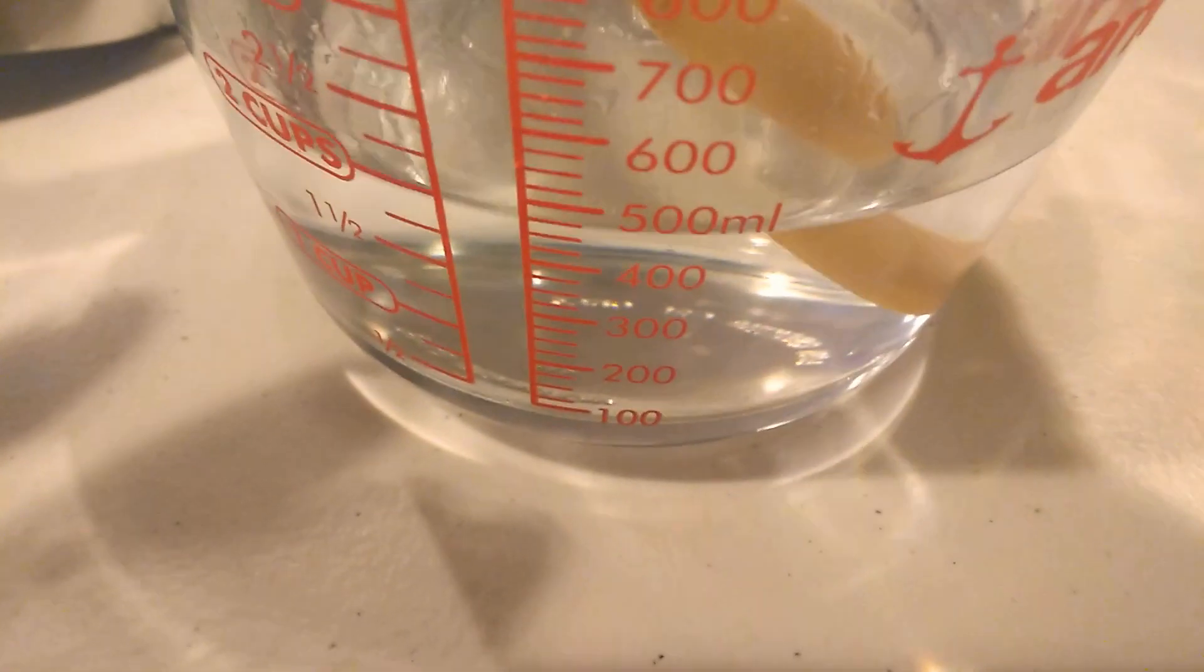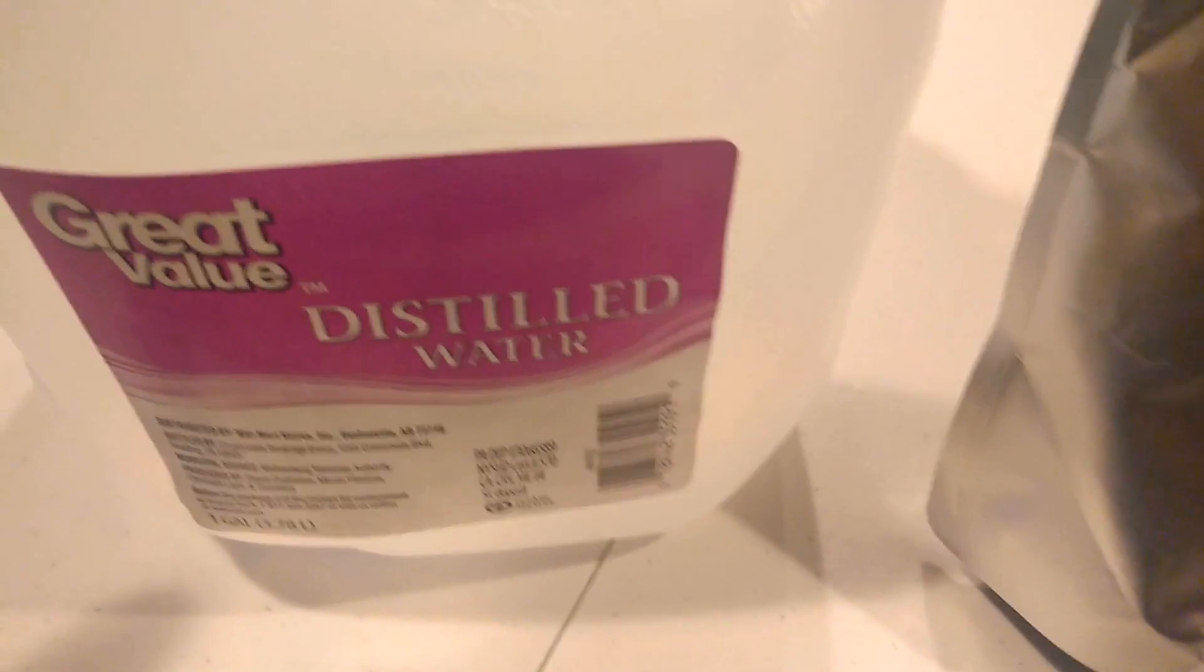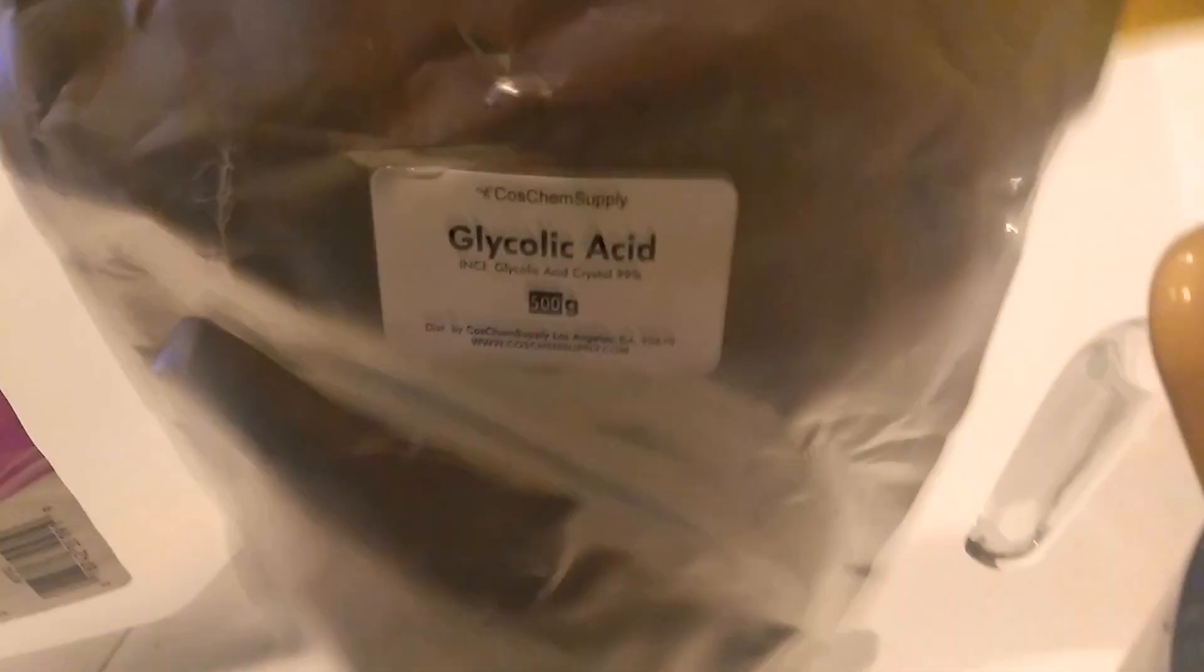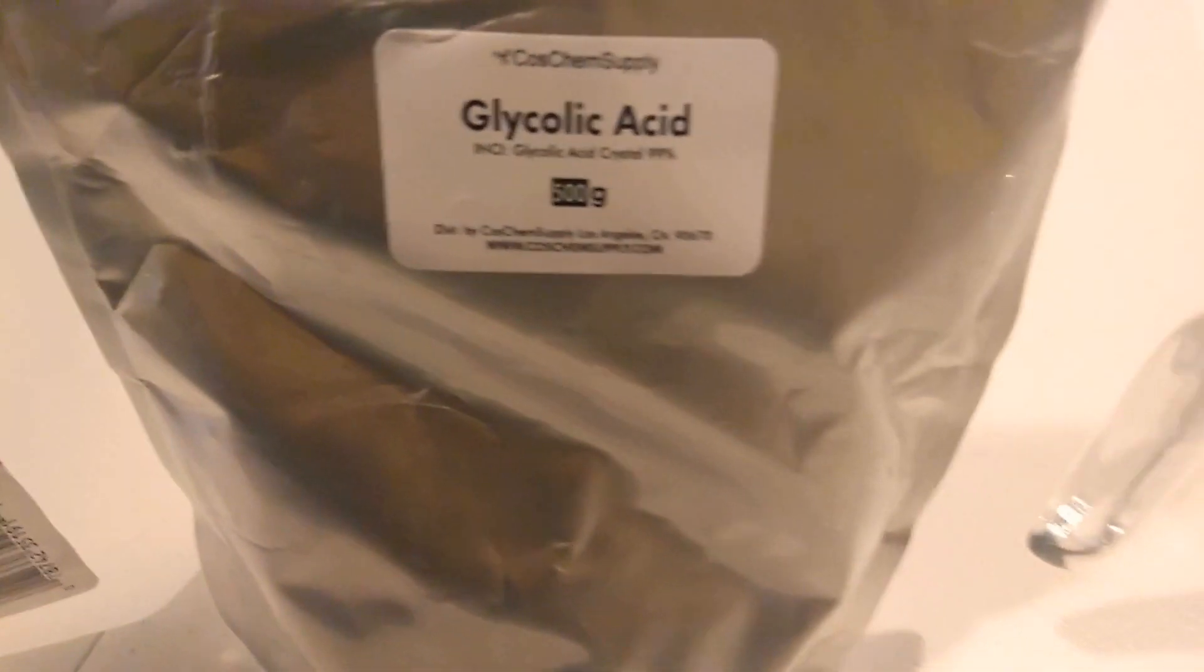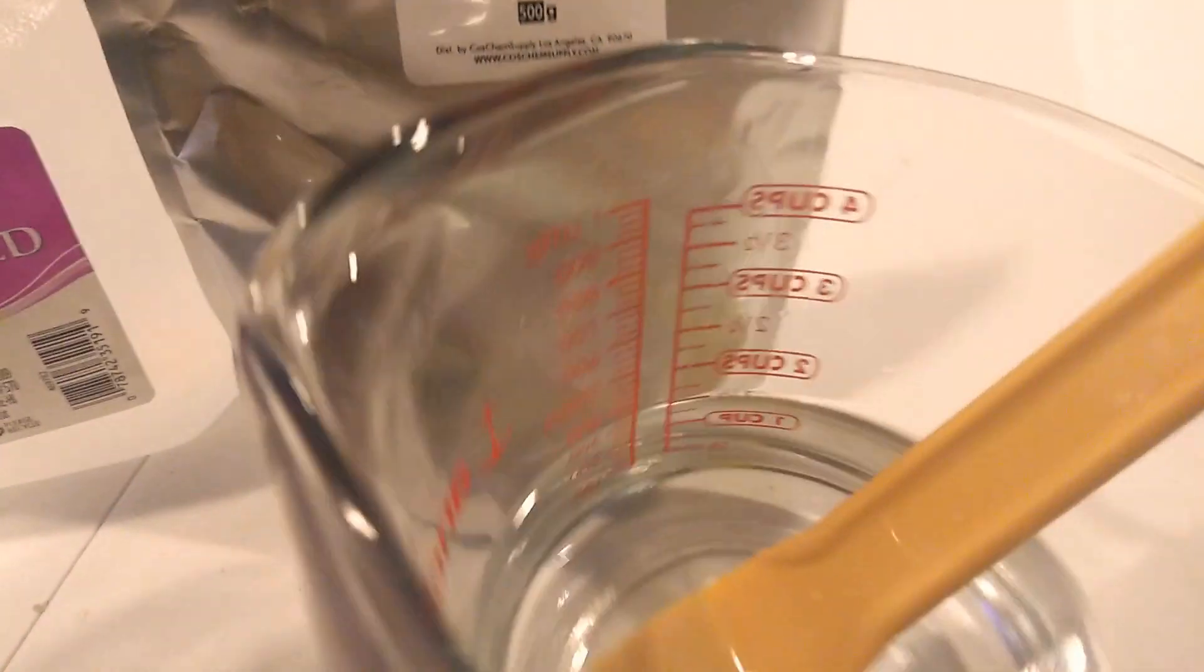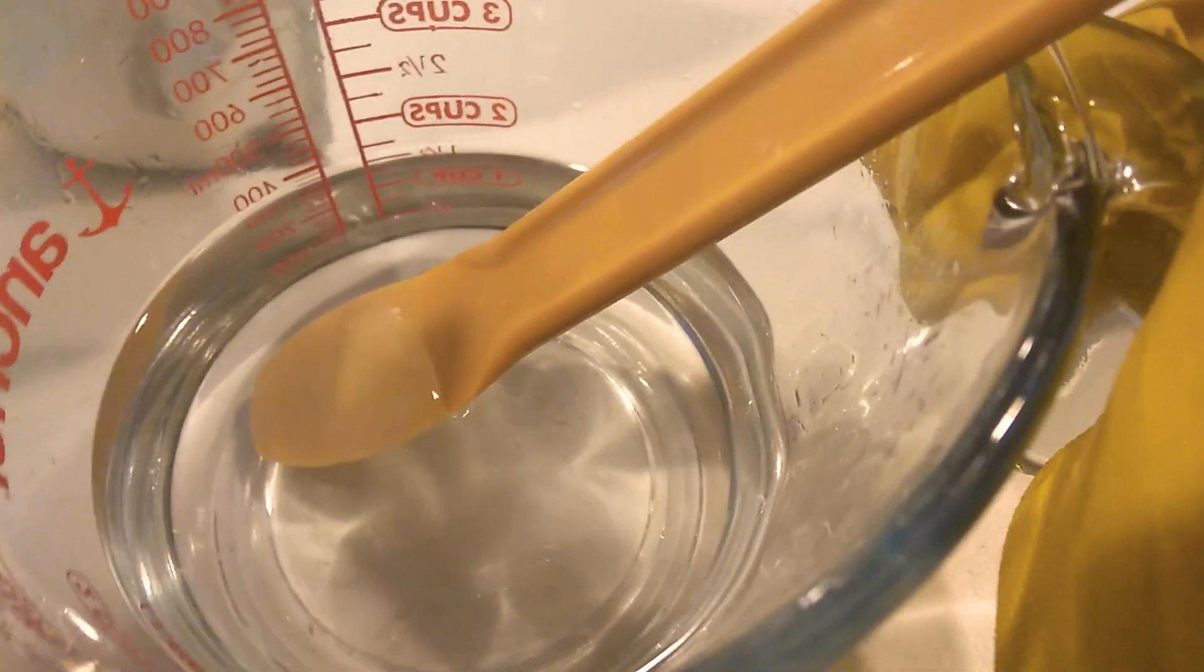To make 500 ml, all you need is distilled water - just 150 grams of distilled water - and then 350 grams of glycolic acid crystal or powder, whatever you call it. Get your water, the 150 grams, and add it to a heat-safe glass just like this. You can do a double boiler or put it in the microwave. I use microwave to heat the water.